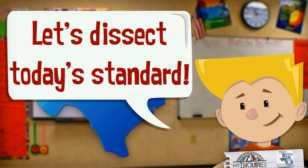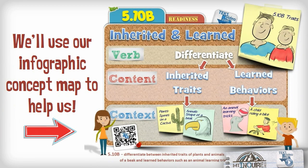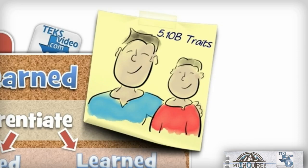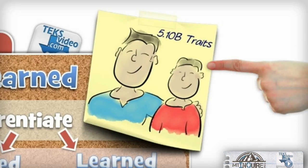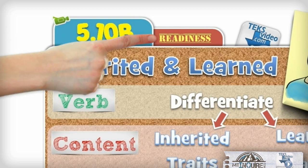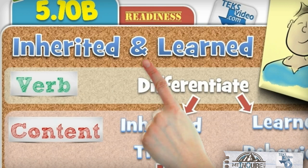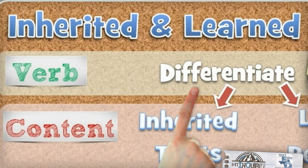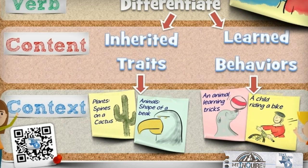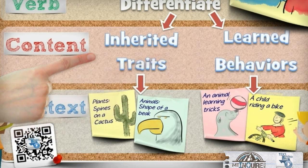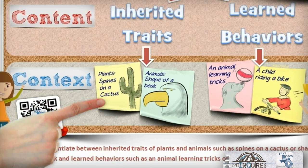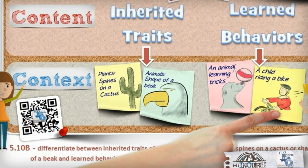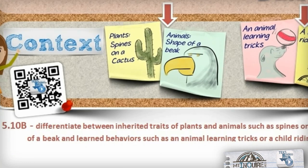Let's dissect today's standard. We'll use our Infographic Concept Map to help us — create your own in your notebook to help you remember. Let's examine 5.10B Traits. Remember, this is a readiness standard. Our title is Inherited Traits and Learned Behaviors. The verb or action involved in the standard is 'differentiate,' which means to find the difference between. The content is Inherited Traits and Learned Behaviors. The context deals with plants — for example, spines on a cactus or the shape of a beak — and learned behaviors, such as an animal learning tricks or a child riding a bike.